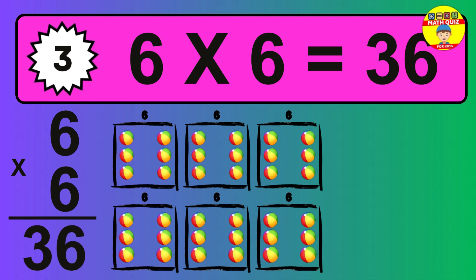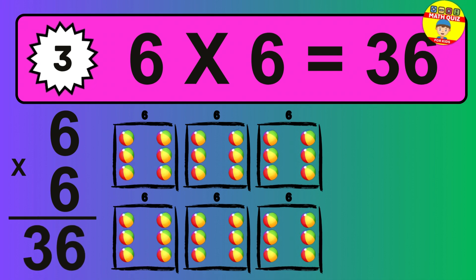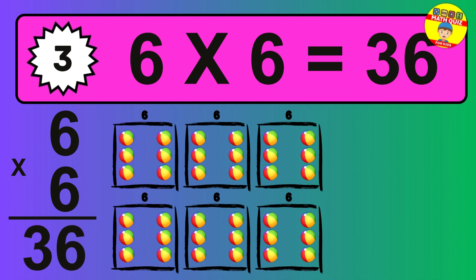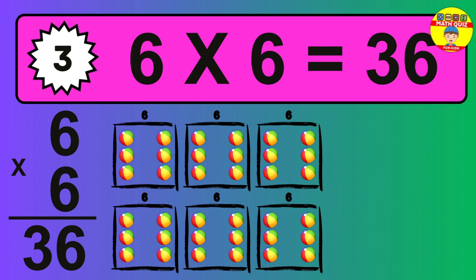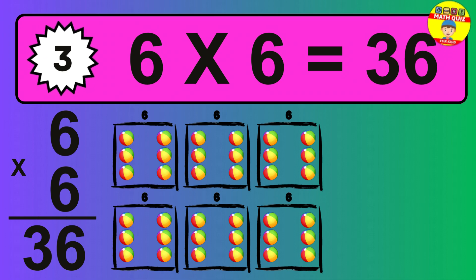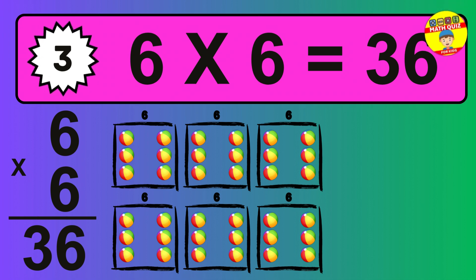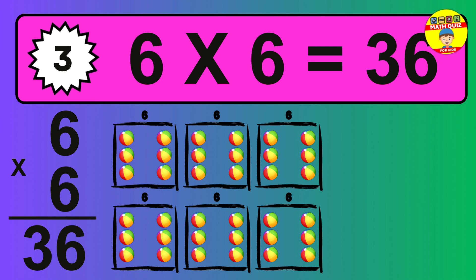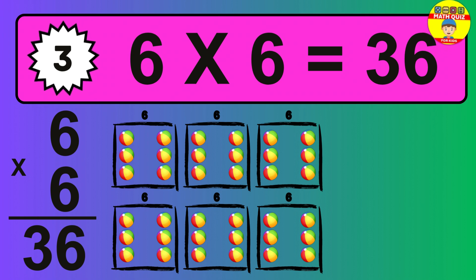The answer is 6 times 6 is 36. To calculate, we have 6 groups with 6 balls each one. So how many balls do we have? 36 balls.